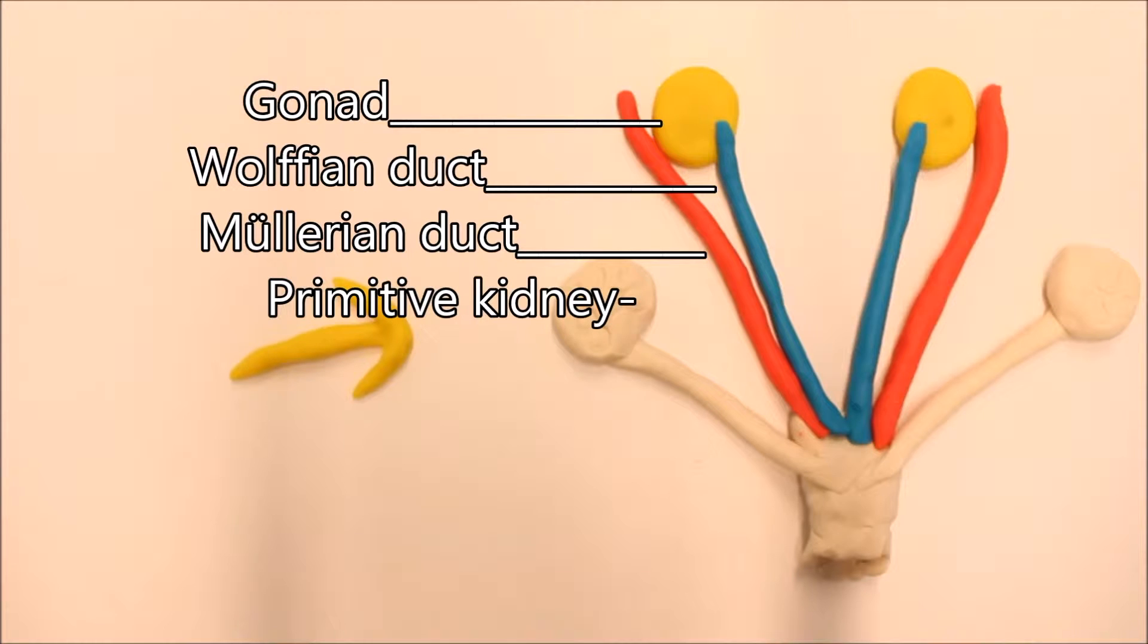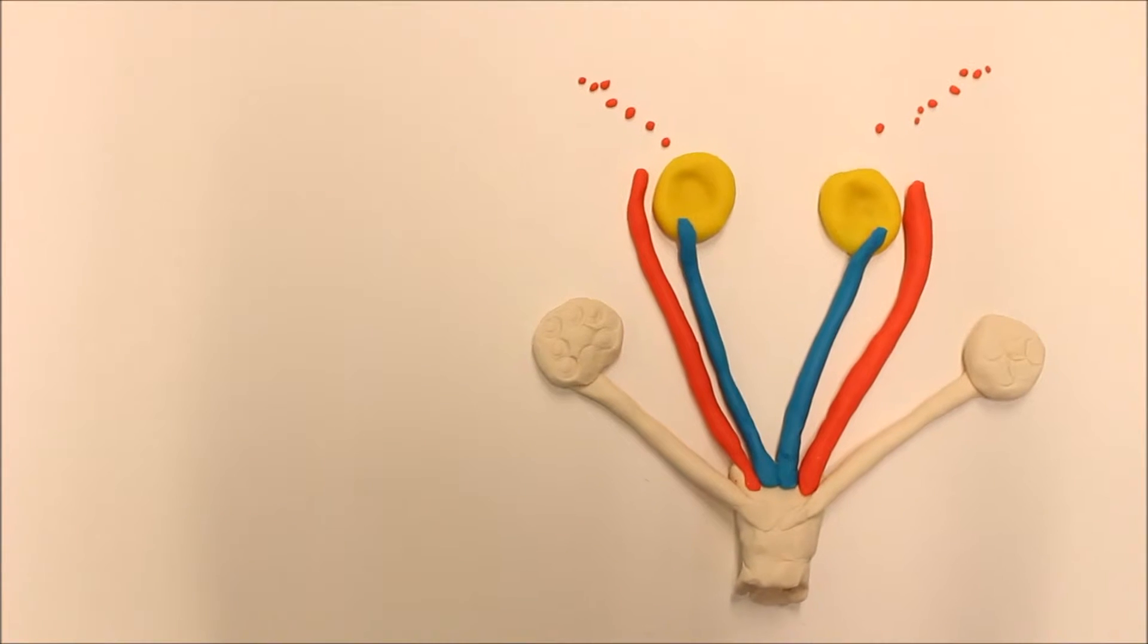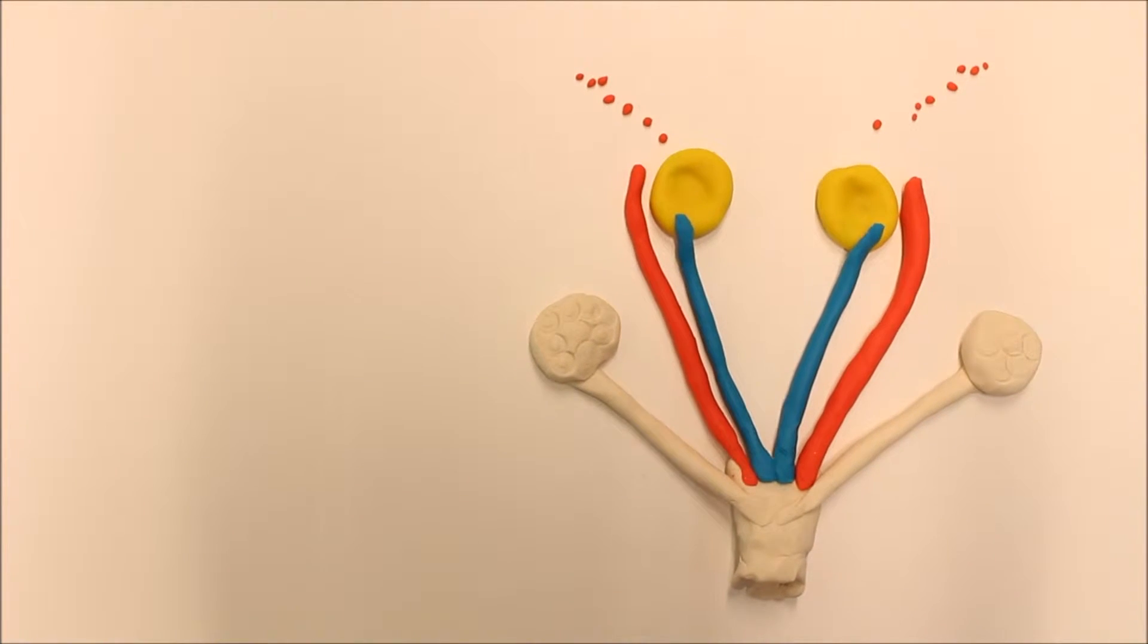The gonads form together with the Müllerian duct and the Wolffian duct. During week four, the germ cells, which will later become the sperm or egg cells, migrate into the gonads.